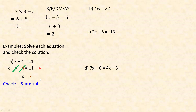Here's what the check looks like. LS stands for left side. The left side of the equation is x plus 4, so we put our 7 in place of x: 7 plus 4 equals 11. The right side is 11. Because we substituted 7 for x and evaluated to get what's on the right side, it checks.